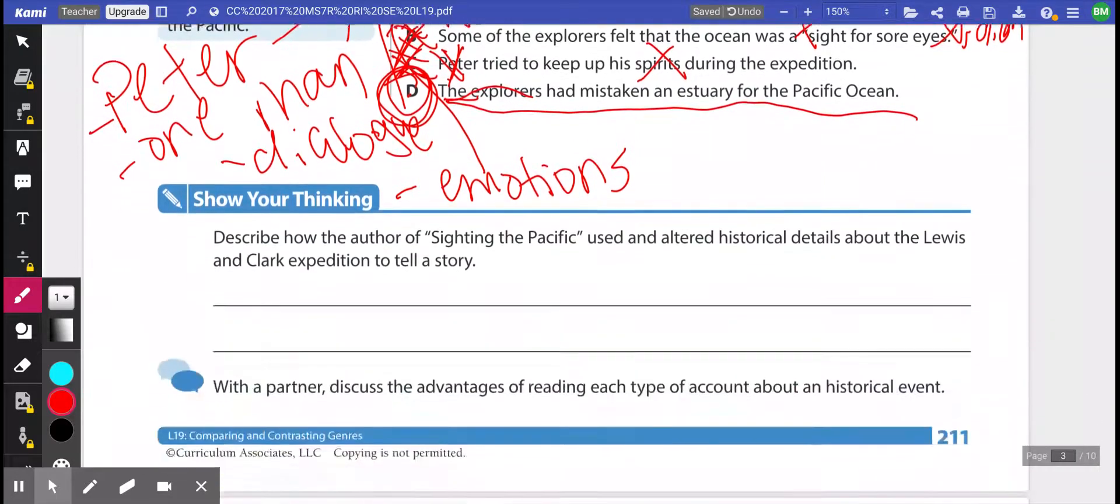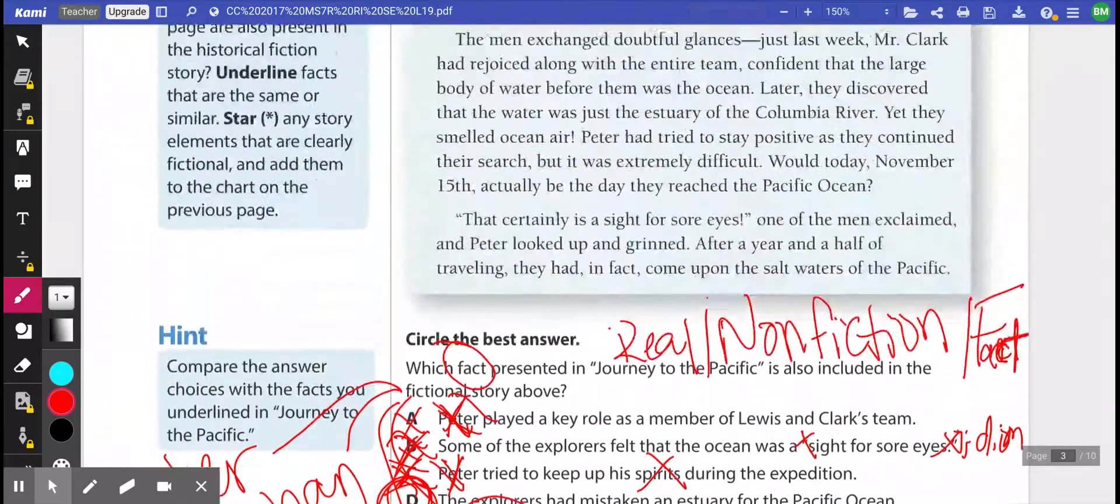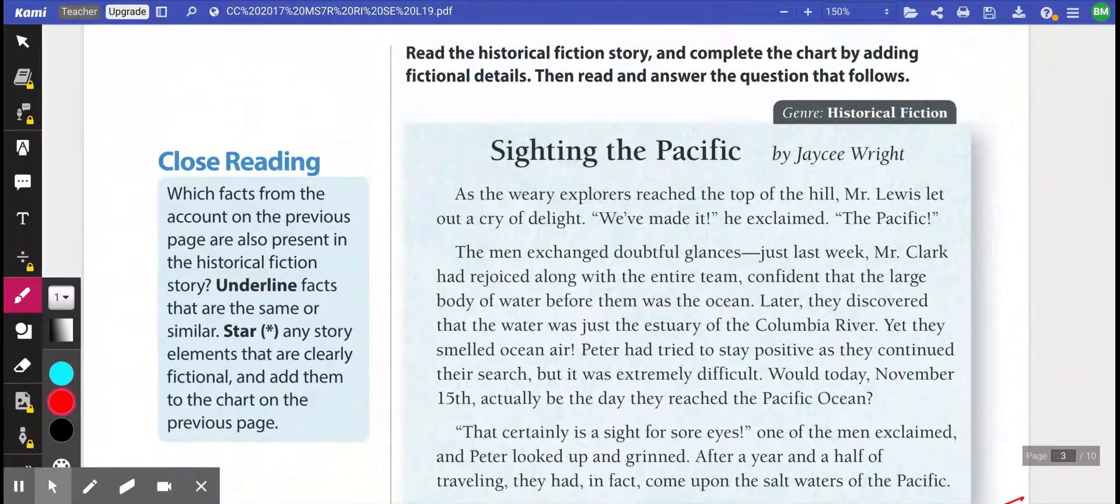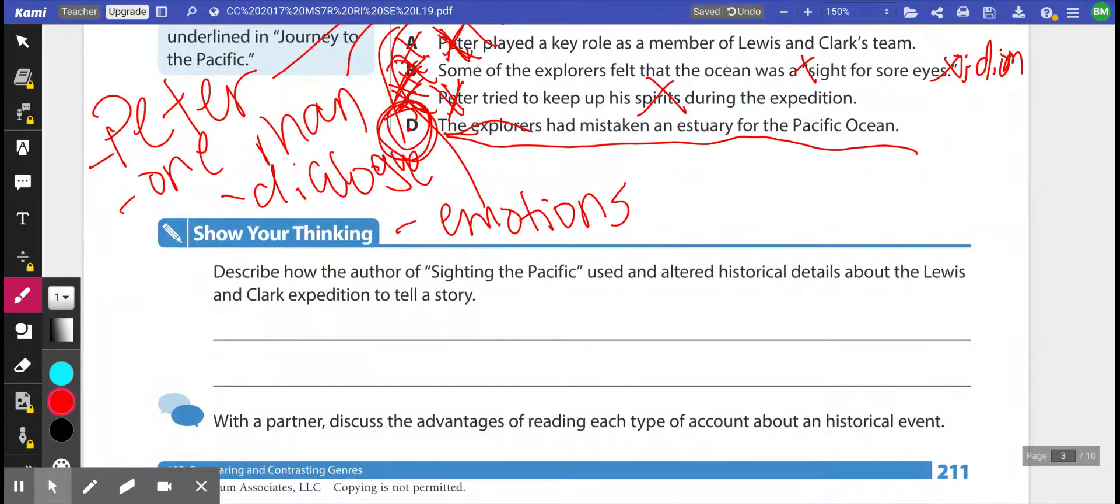Now we're going to scroll down here and we're going to look at our Show Your Thinking. And it wants you to describe how the author of Sighting the Pacific used and altered historical details about the Lewis and Clark expedition to tell a story. So how did the author, who is Joyce Wright, how did Wright use these facts and things that we learned in the account to use and alter details? I'm going to let you go ahead and try to write that in and see if you can come up with your answer.